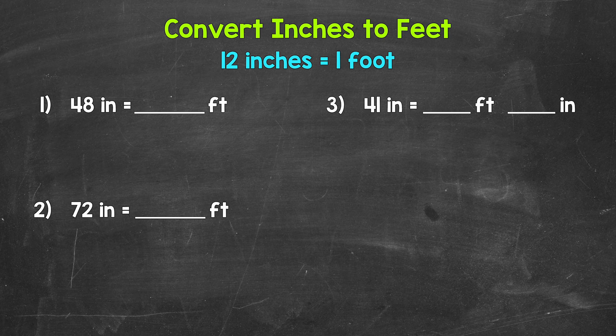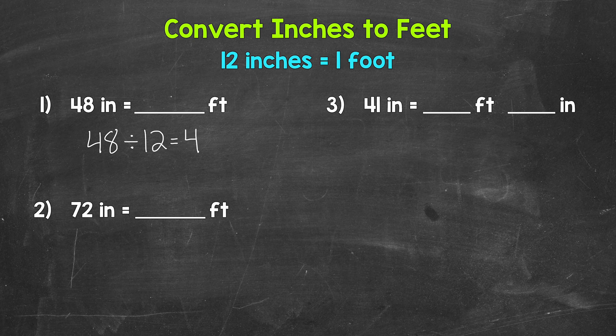Let's jump into our examples, starting with number 1 where we have 48 inches equals how many feet. Well, think about it like this. Each group of 12 inches equals a foot. So how many groups of 12 inches in 48 inches? So what we need to do here is divide. We have 48 divided by 12. 48 divided by 12 gives us 4. 48 inches equals 4 feet.